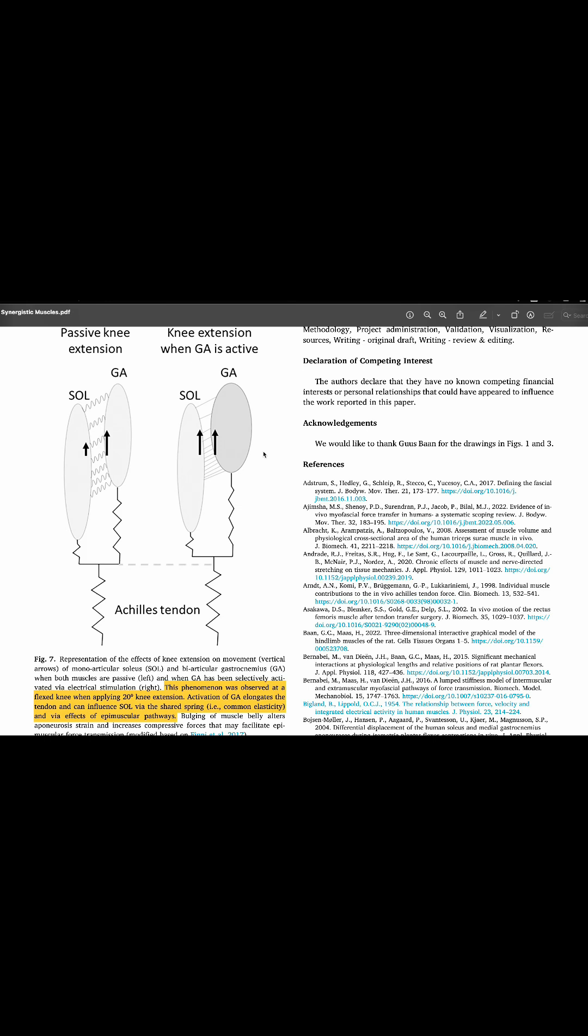So between these two muscles, they share a common junction or common tendon through the Achilles tendon. And when we have a presence of knee extension, there is a change in the relationship or force distribution between the soleus and the gastroc.